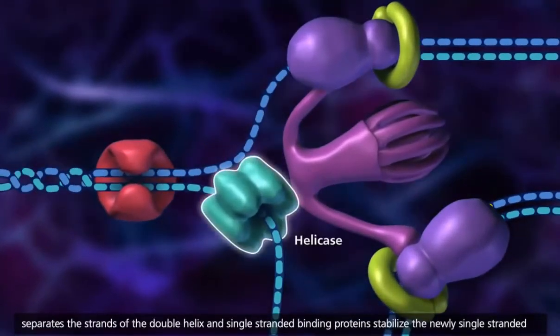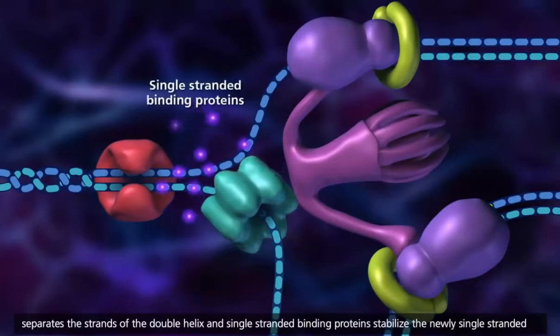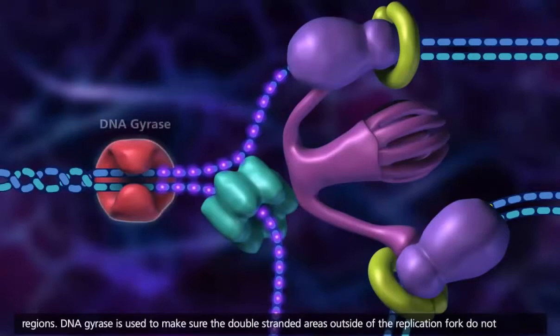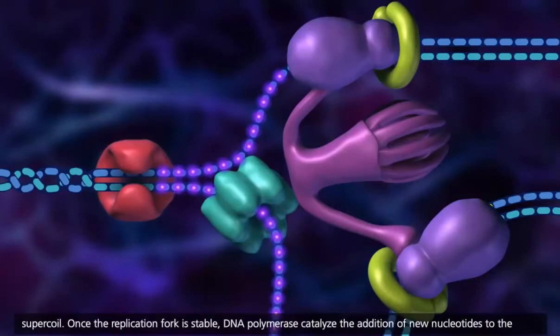Helicase separates the strands of the double helix, and single-stranded binding proteins stabilize the newly single-stranded regions. DNA gyrase is used to make sure the double-stranded areas outside of the replication fork do not supercoil.